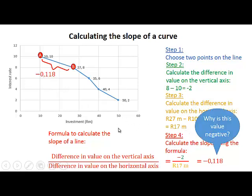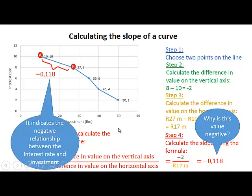So the slope of the line between points A and point B is minus 0.118. Why is this value negative? It indicates the negative relationship between the interest rate and investment — when the interest rate decreases, investment increases.